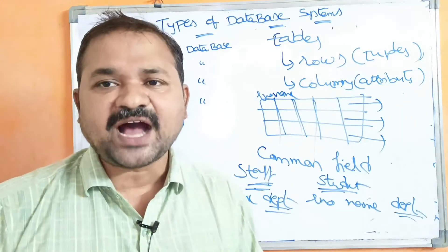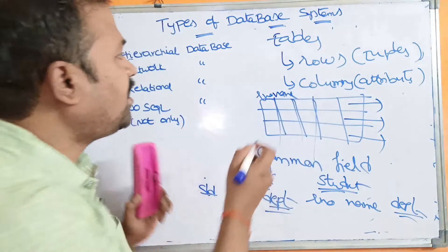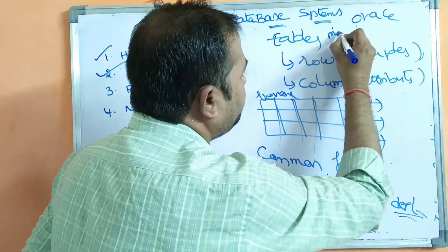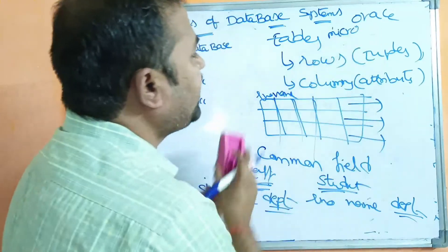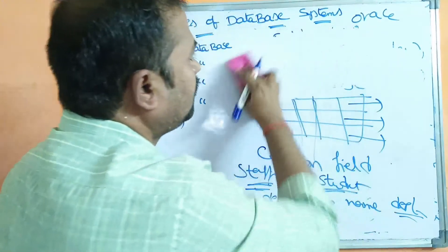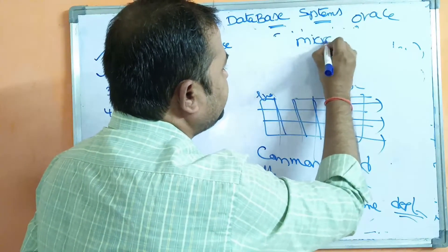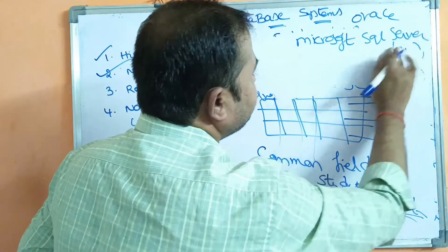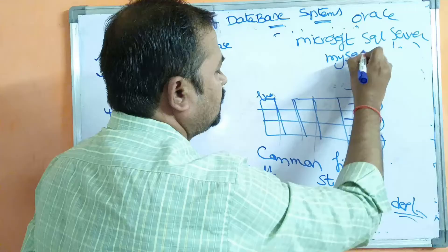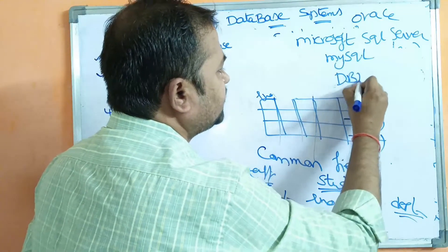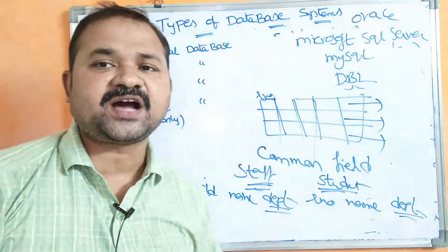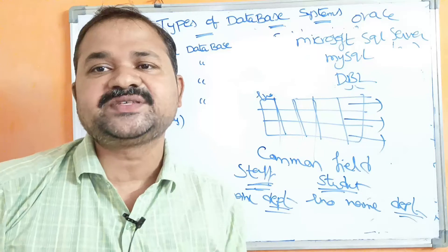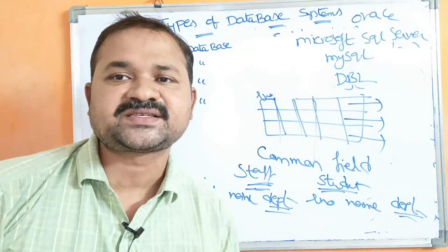The most commonly used relational databases are Oracle, Microsoft SQL Server, MySQL, and DB2. These four are the most commonly used relational databases, and currently we are using RDBMS very frequently.